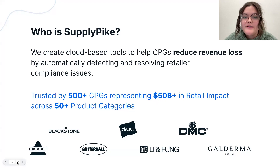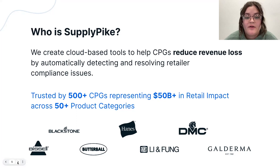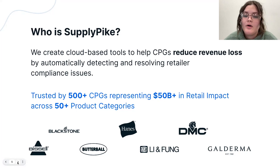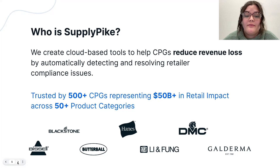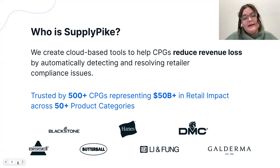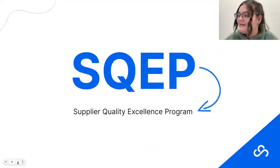If you are new to our webinars or have never heard of Supply Pike, we are a Northwest Arkansas-based software company that helps suppliers reduce revenue loss by detecting compliance issues and fighting them through business logic and automation. We do this with multiple retailers like Walmart, Target, Amazon, and Kroger. We work with suppliers across almost every product category and would love to help reduce revenue loss and win back money owed for you.